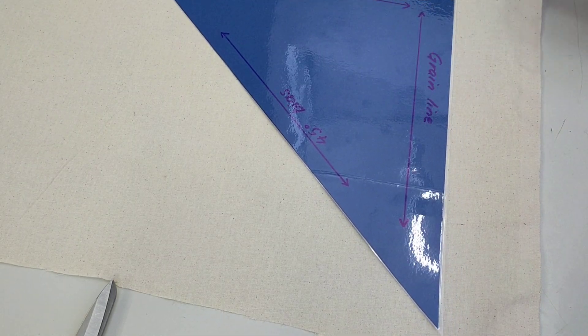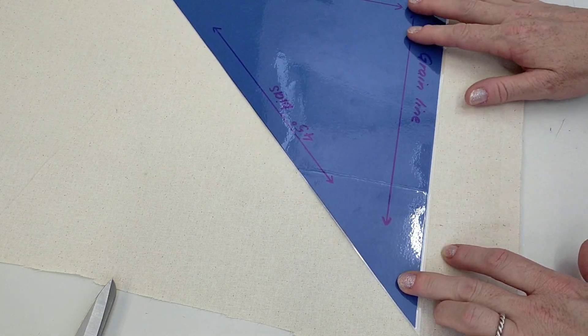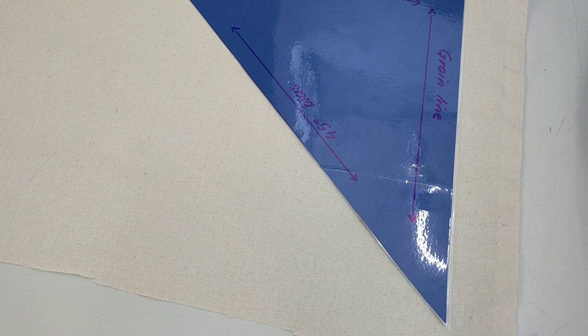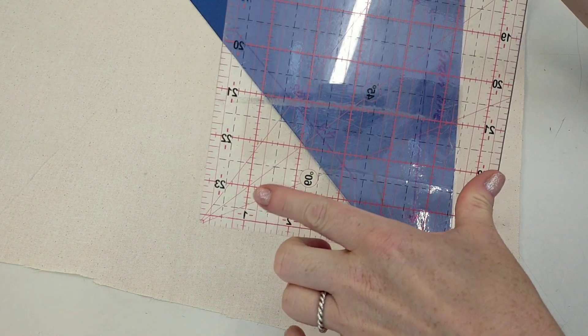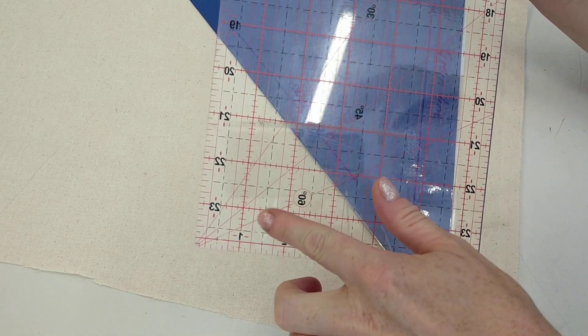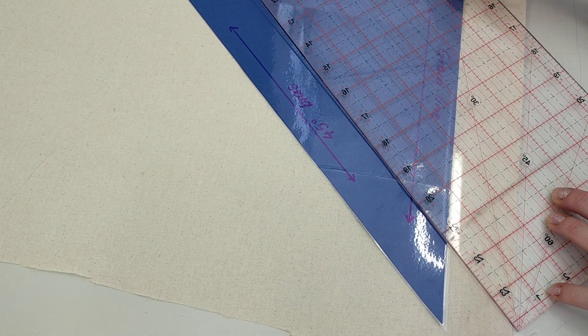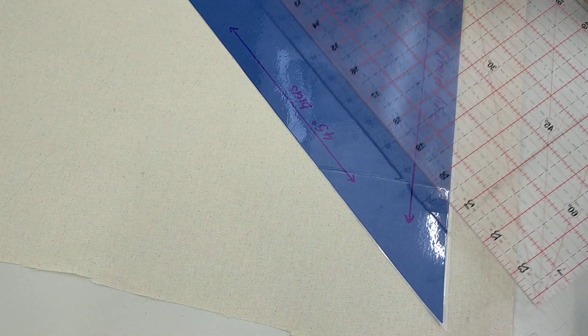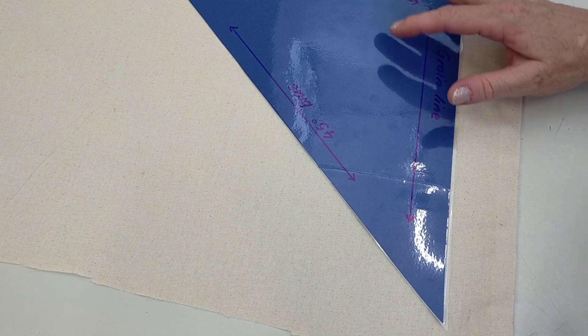Other things you might find is you might find a ruler which has a 45-degree angle line, which you would line up on your selvage or your grain line somewhere to get the right angle.